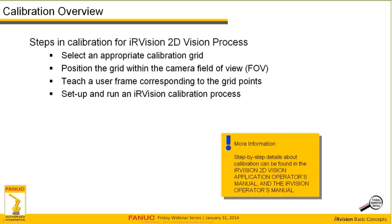The steps in calibration for the IR Vision 2D vision process are: select an appropriate calibration grid — we want the grid to cover most of the field of view, as areas not covered have to be considered indeterminately calibrated. Position the grid in the field of view, teach a user frame corresponding to grid points, and then set up and run an IR Vision calibration process. If the grid doesn't cover all of the field of view, those uncovered areas will return a real-world point but we can't guarantee they are correctly determined.